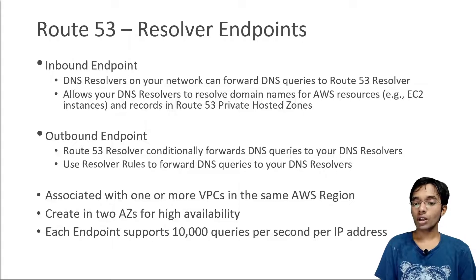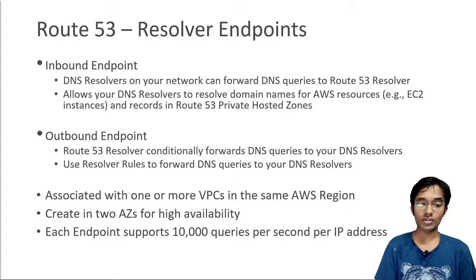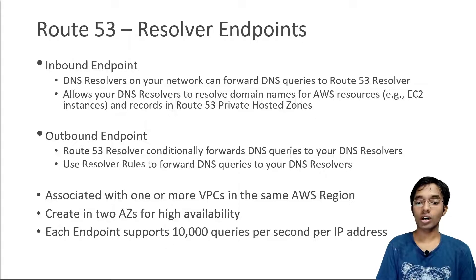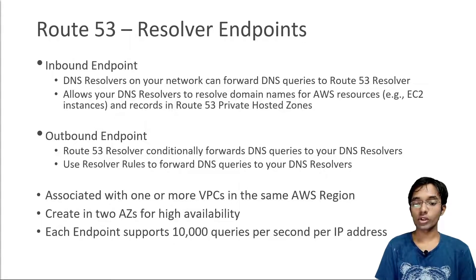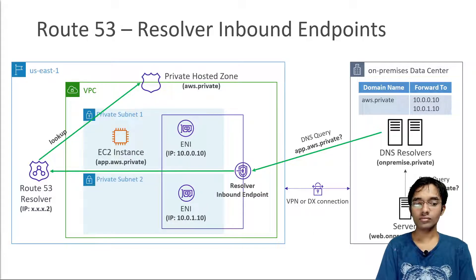Each endpoint supports about 10,000 queries per second per IP address, and if you need more you can add more IP addresses. These managed resolver endpoints are owned by AWS, replacing the older approach where people had to run their own DNS resolvers on AWS and link them to on-premises resolvers. Let's look at a diagram to make this clearer.